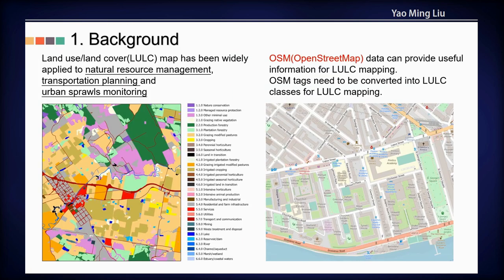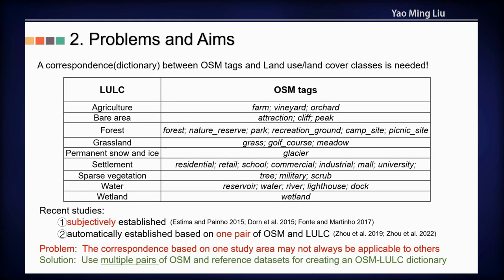Land use land cover maps have many significant applications. OpenStreetMap can provide useful information for land use land cover mapping. However, the classifications for OSM and land use land cover are different, so a correspondence between them is needed.